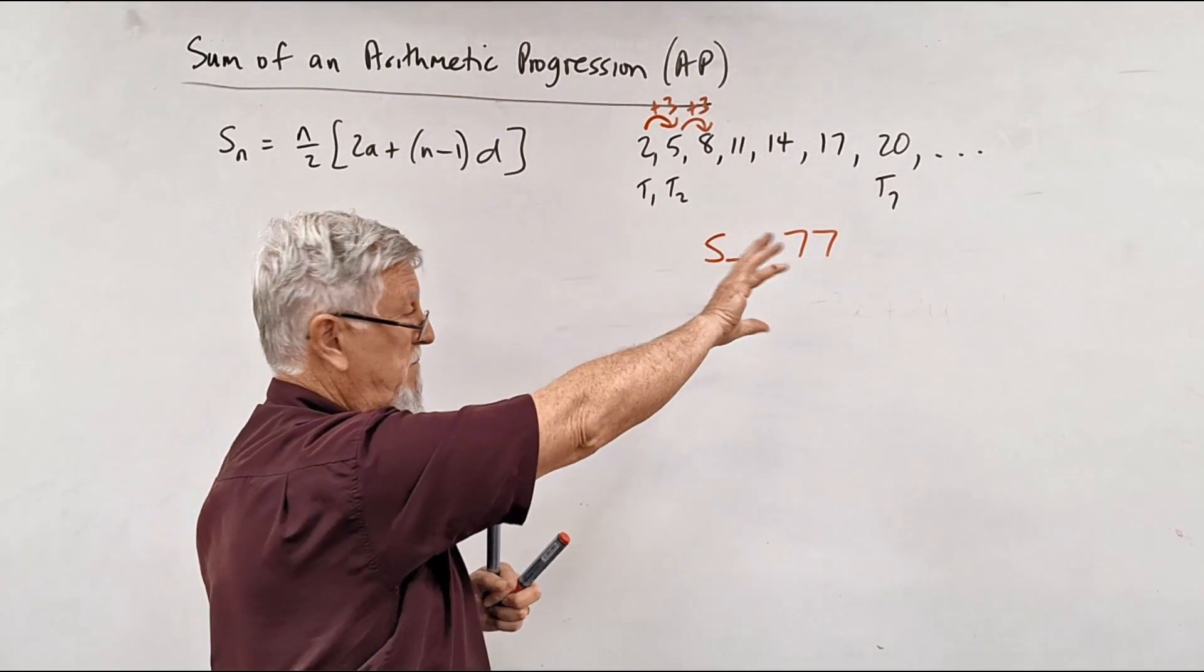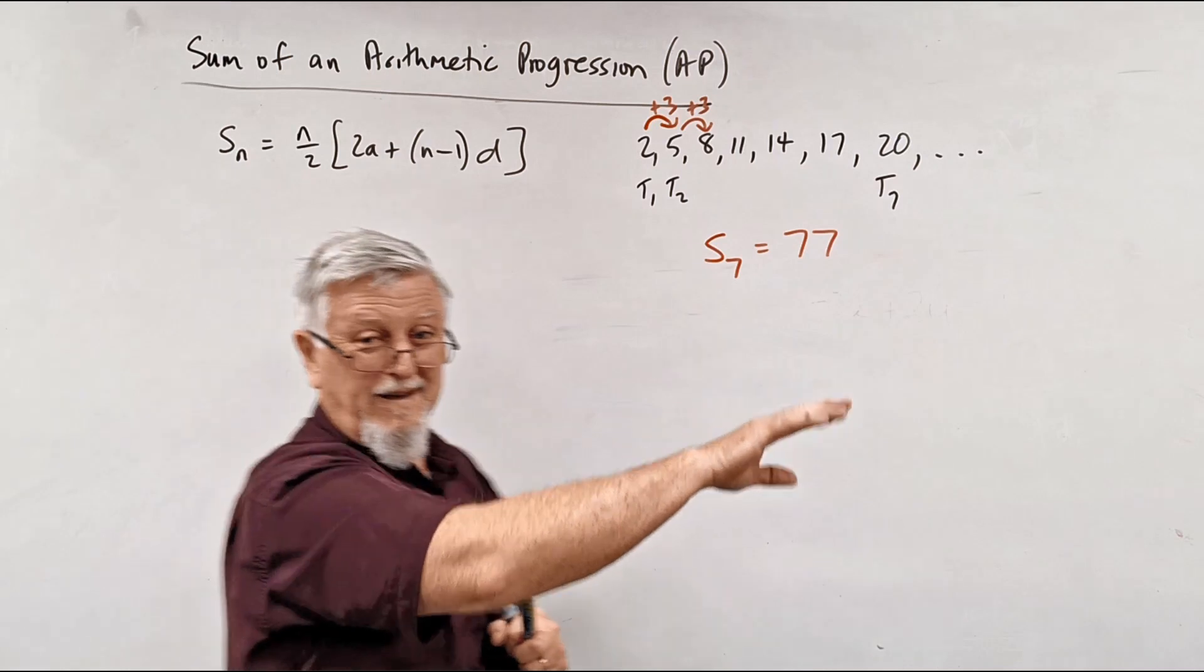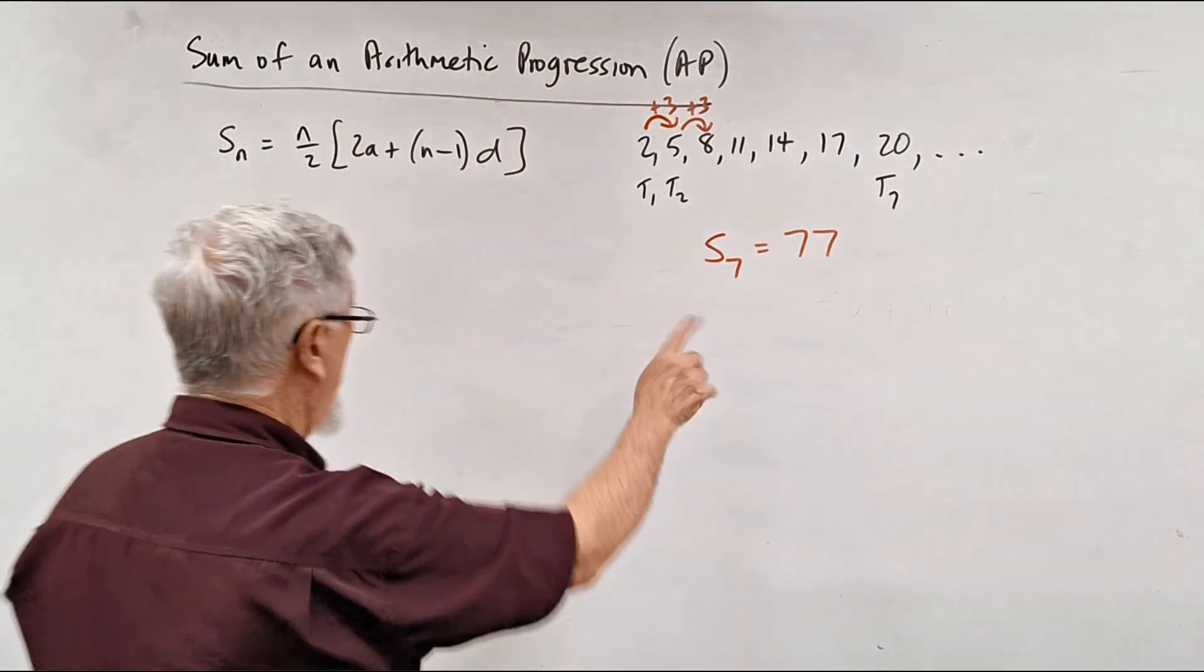The sum of the first 7 numbers happens to be 77. So you could check that, add it up yourself. But hopefully, if I don't make a silly mistake, what we're going to get will be the same.